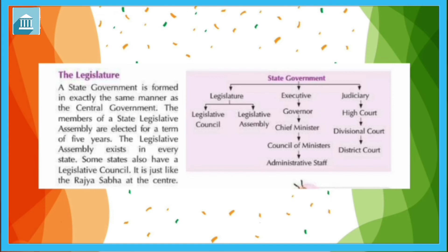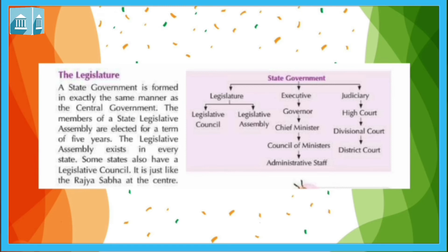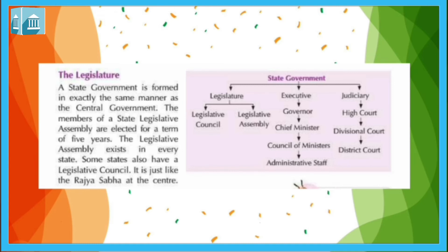Regarding the state executive: the Governor is the highest authority in the state. The Governor is appointed by the President of India and acts as a link between the state government and the central government. The Chief Minister and the Council of Ministers are responsible for implementing laws made by the legislative assembly. The state executive hierarchy is: Governor, then Chief Minister, then Council of Ministers, then administrative staff.